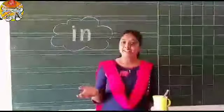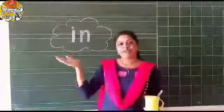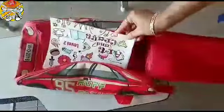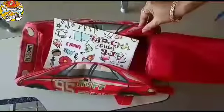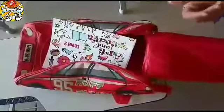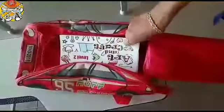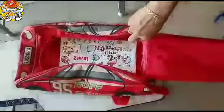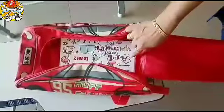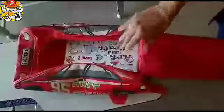Now let's understand how to use 'in' with some objects. This is a book and this is a bag. Now look here. Where is the book? A book is in a bag. Book kaha par hai? Bag ke anndar. So we will say a book is in a bag.